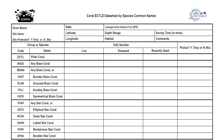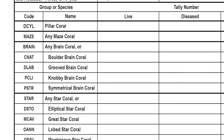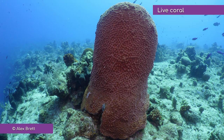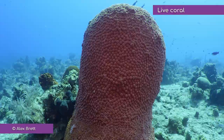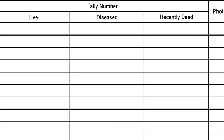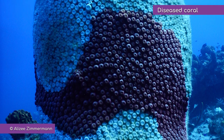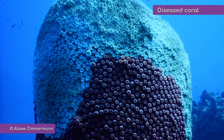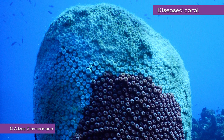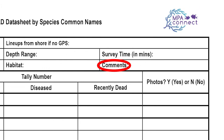Live corals look healthy with normal healthy tissue color and no signs of active disease, bleaching, or unusual signs of stress. The column for diseased corals should be used to indicate those corals affected by stony coral tissue loss disease. These may have tissue sloughing off, exposing white intact skeleton. If the corals are affected by other diseases, then these can be noted in the comment section.